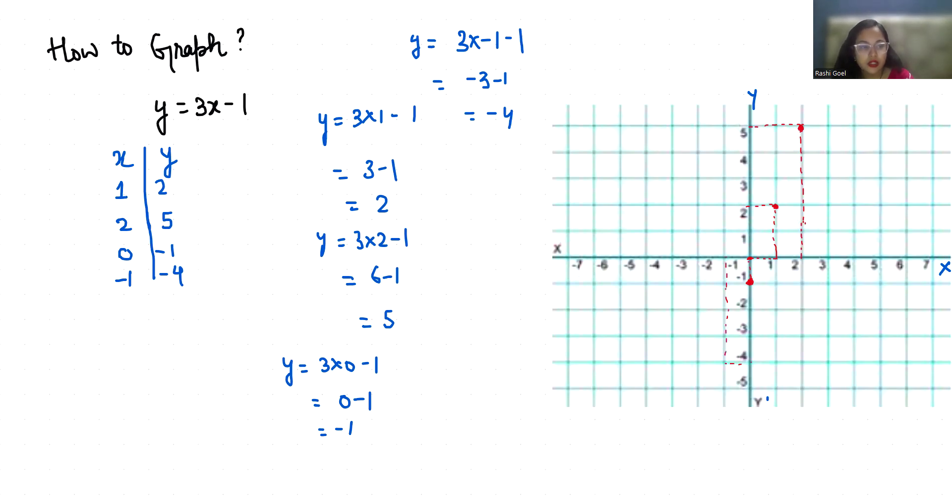Now let's join these coordinates. So this line denotes the equation y equals 3x minus 1.